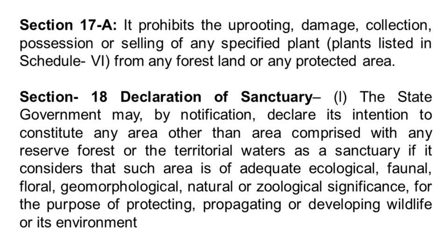Section 17A of the act prohibits the uprooting, damage, collection, possession, or selling of any specified plant — that is, plants listed in Schedule 6 — from any forest land or any protected area. Those specified plants are: Beddom, Saikad, Blue Vanda, Coote, Lady Slipper Orchids, Pitcher Plants, and Red Vanda. These are the specified plants which cannot be grown without the permission of the Chief Wildlife Warden.